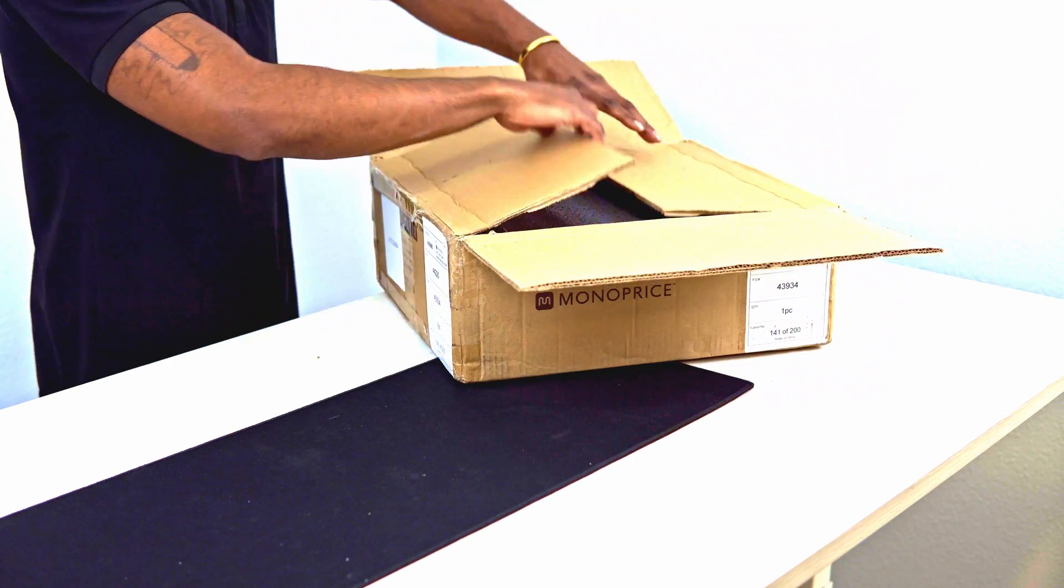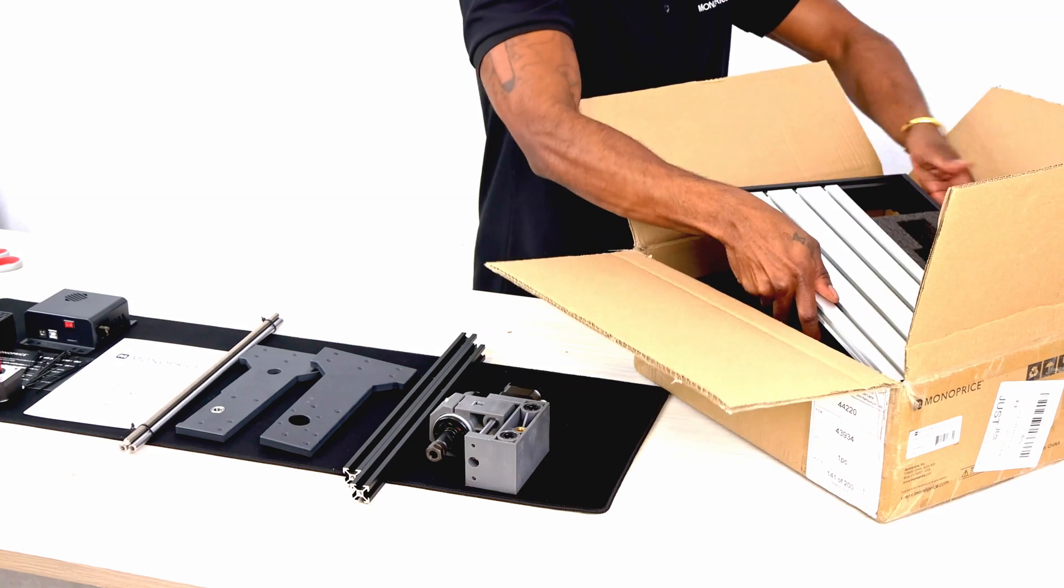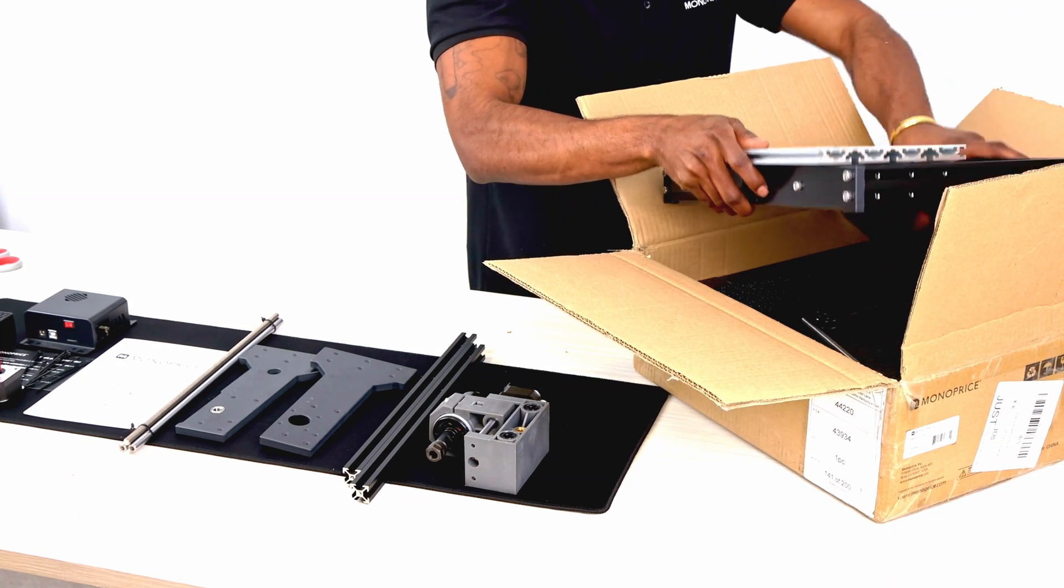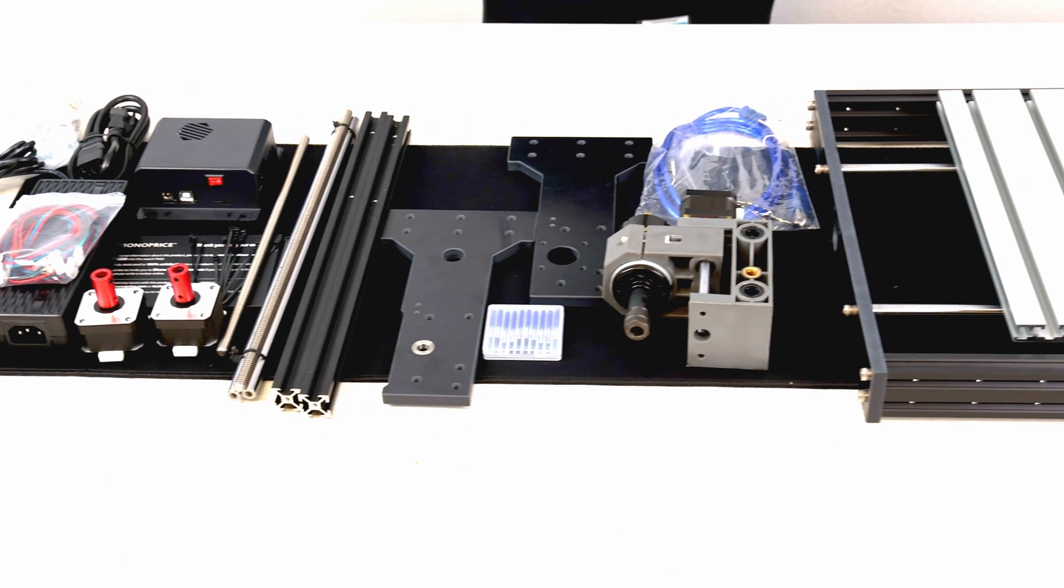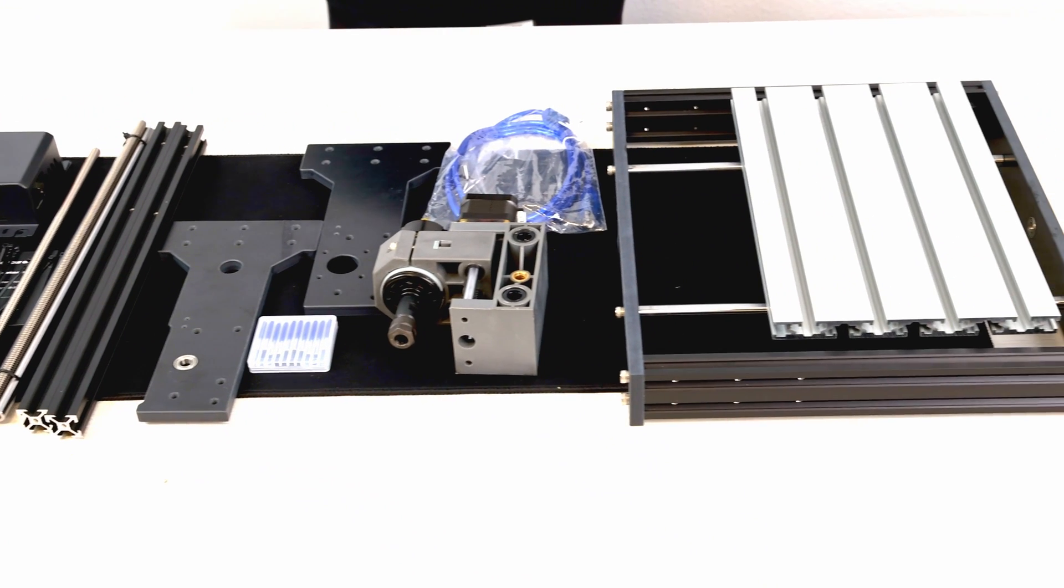Let's get started and lay out all of our components that come supplied with the unit. Take inventory of the package contents to be sure that you have all the listed items. If anything is missing, please contact our Monoprice customer support team for a replacement.